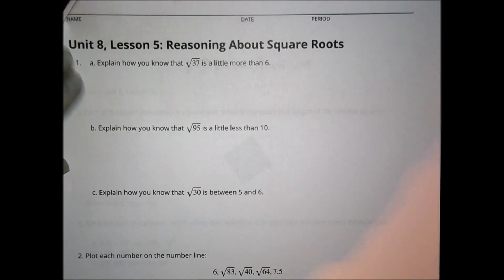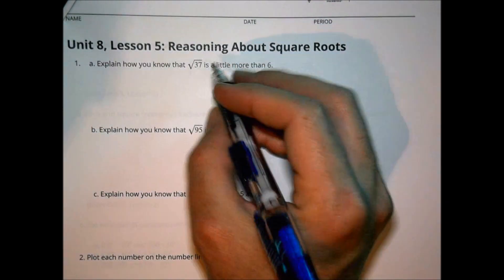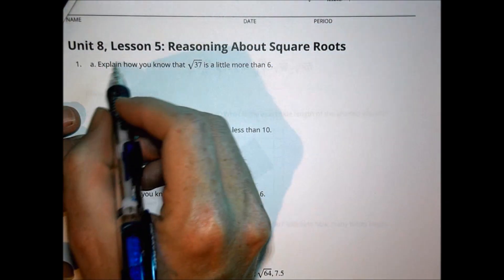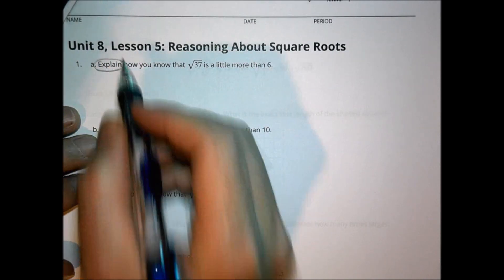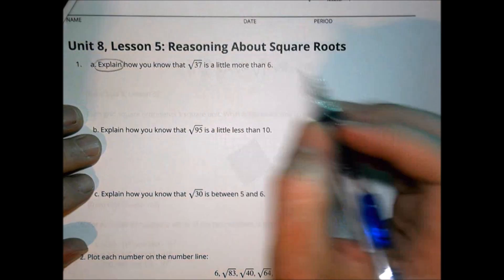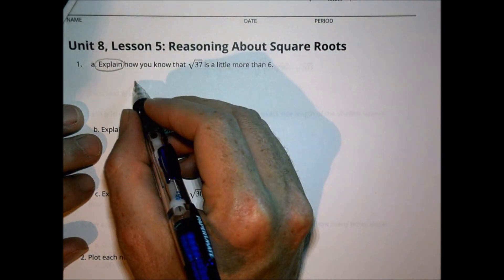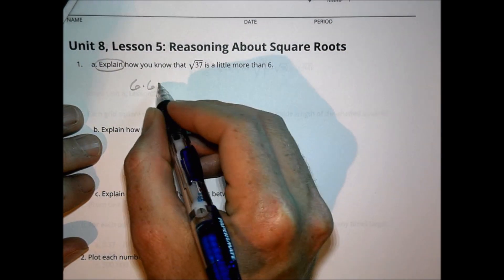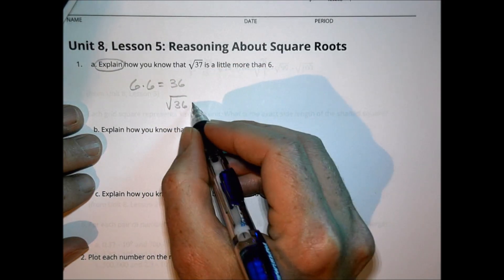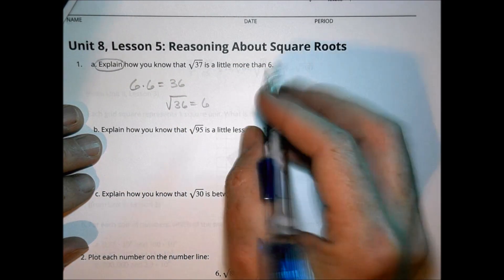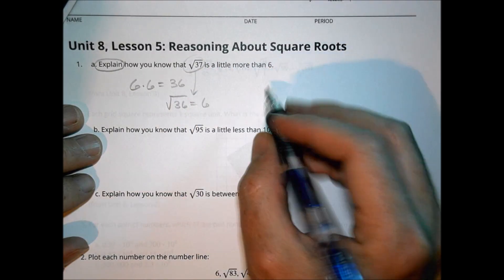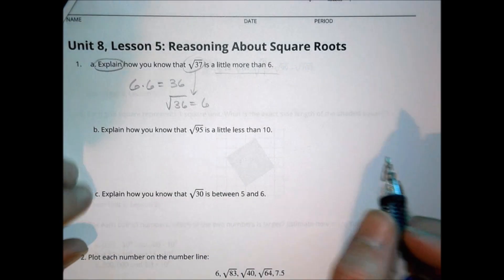Number 1: explain how you know that the square root of 37 is a little more than 6. You need to write a written explanation. The reason is that 6 times 6 equals 36, so the square root of 36 equals 6. Because 37 is a little bit more than 36, the square root of 37 is going to be a little more than 6 as well.